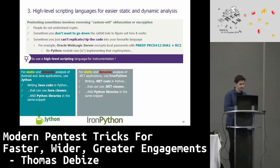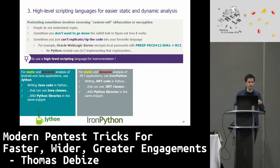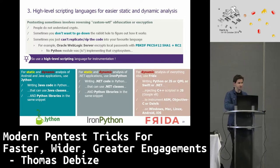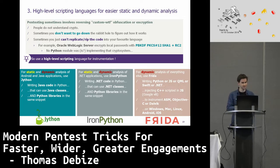Jython is a framework that allows you to write Java code with Python syntax — calling Java classes from Python. You can use Java classes and Python libraries in the same line with Python syntax, which is convenient if you don't like Java semicolons and brackets. For .NET applications, there's IronPython, which lets you write .NET code in Python syntax, mixing .NET classes and Python libraries in the same script. And for everything else, use Frida — it lets you write Python, JavaScript, QML, or Swift to inject C++ scripted via the V8 engine to instrument assembly, Objective-C, or Dalvik on Windows, Mac, Linux, Android, and iOS.